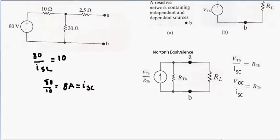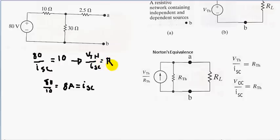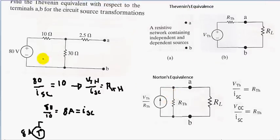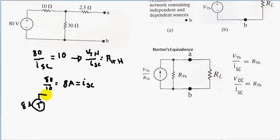So we just found the value of this current source. V open circuit over I short circuit equals R Thevenin's. So 8 amps is the value of our current source. Let's redraw the circuit after source transformation. We have an 8 amp current source, and since we're converting from Thevenin's to Norton's equivalent, this resistor is simply in parallel with the current source — so we have 10 ohms in parallel.